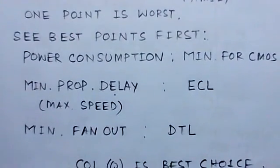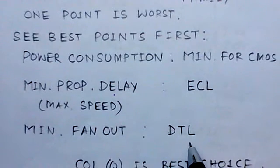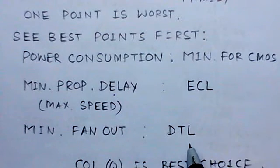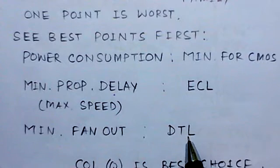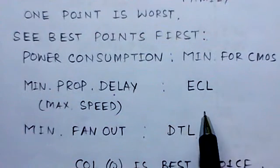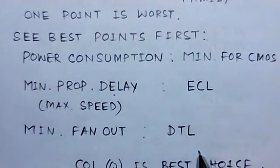The last point is minimum fan out. Only DTL has a minimum fan out as compared to the other logic families being considered here — DTL, TTL, ECL, and CMOS — so DTL has the minimum fan out.